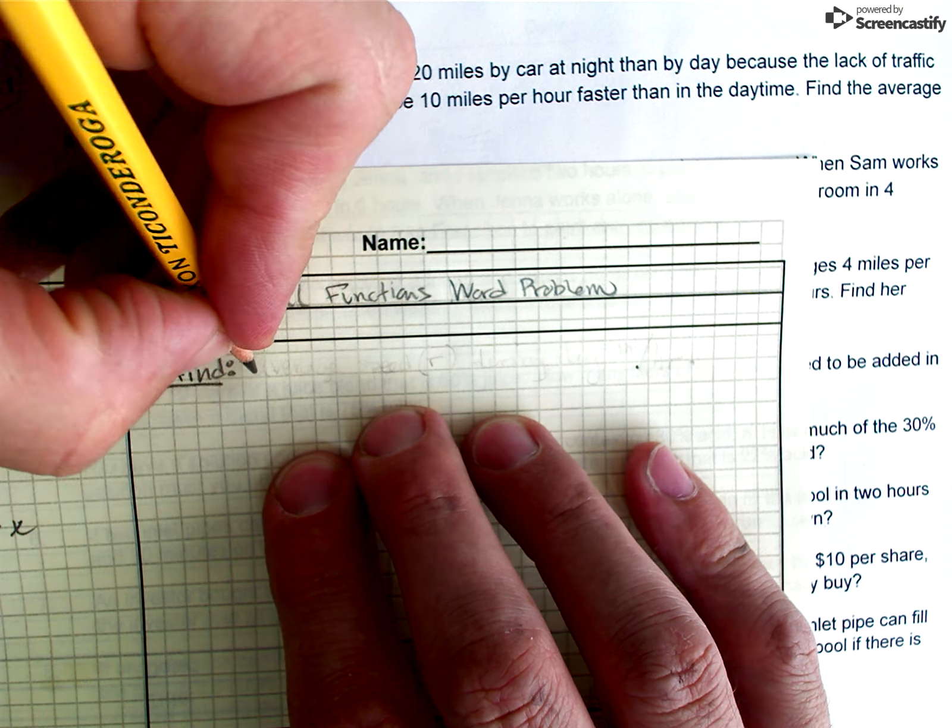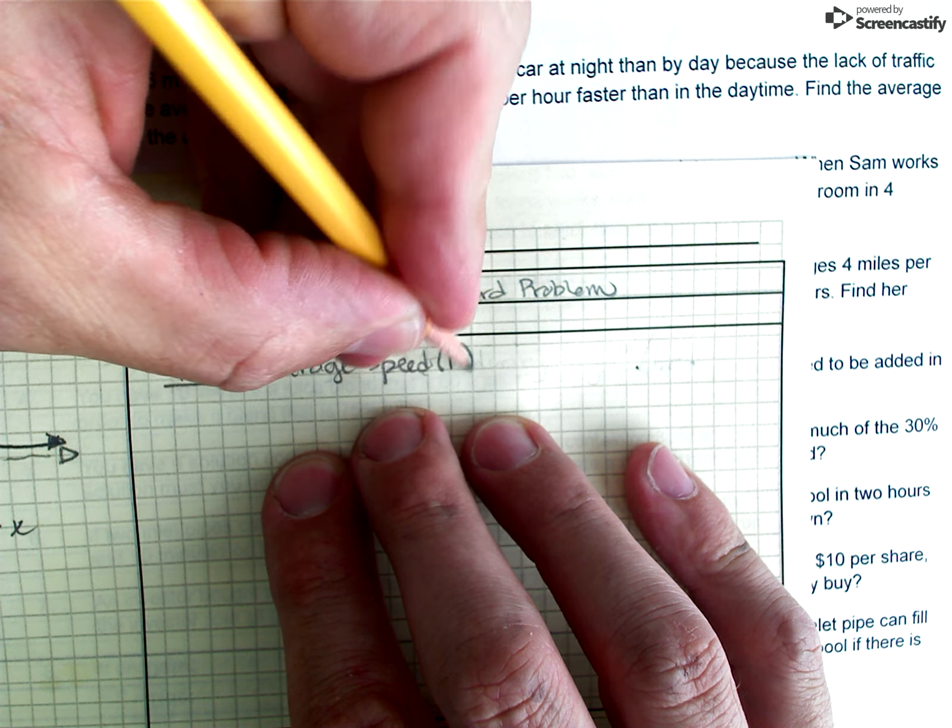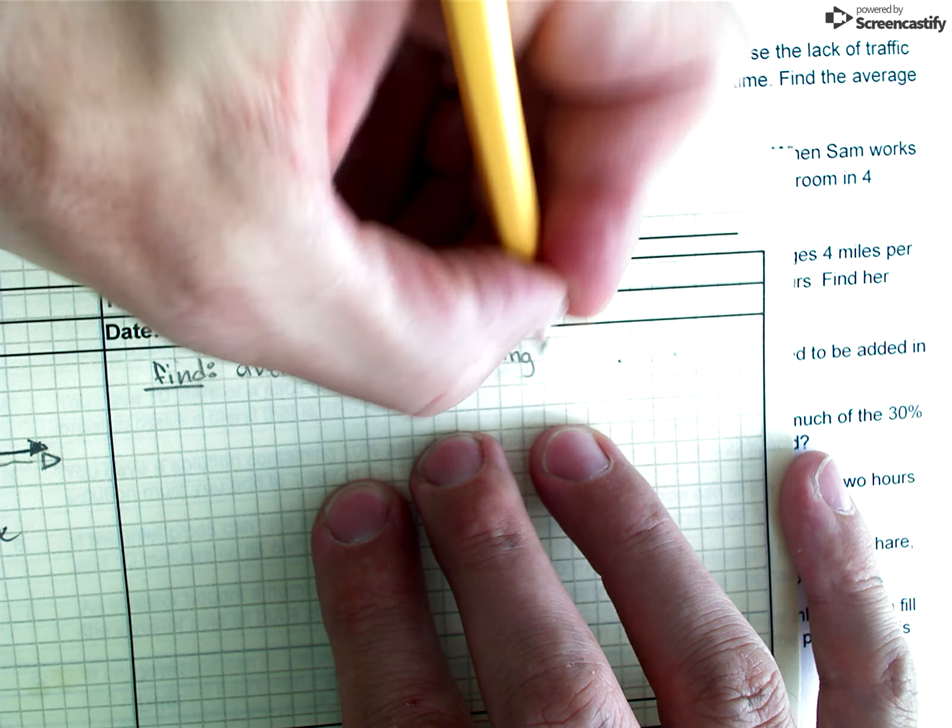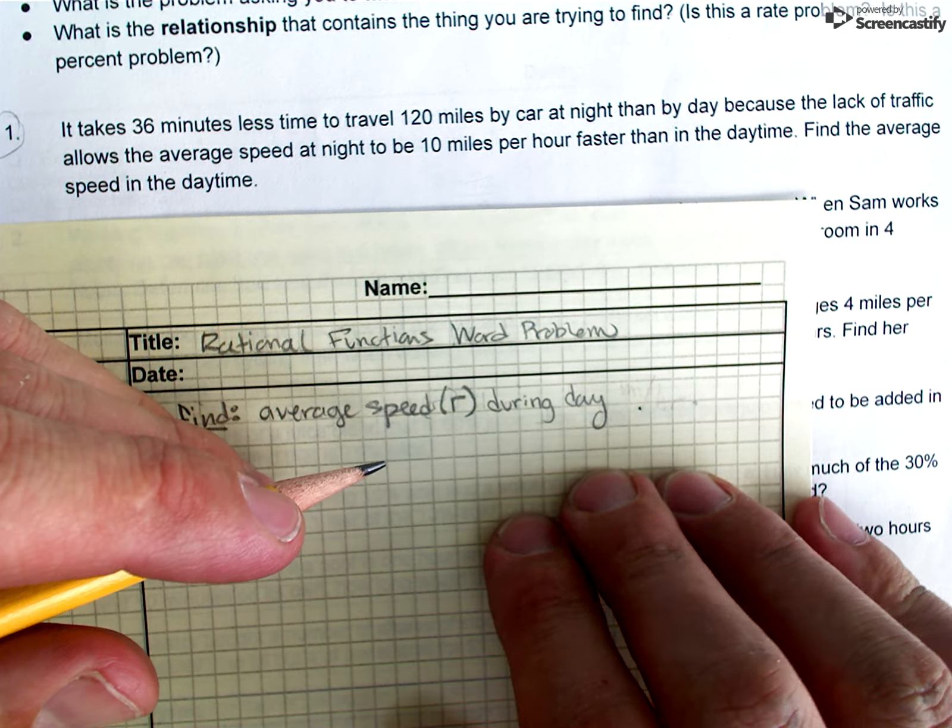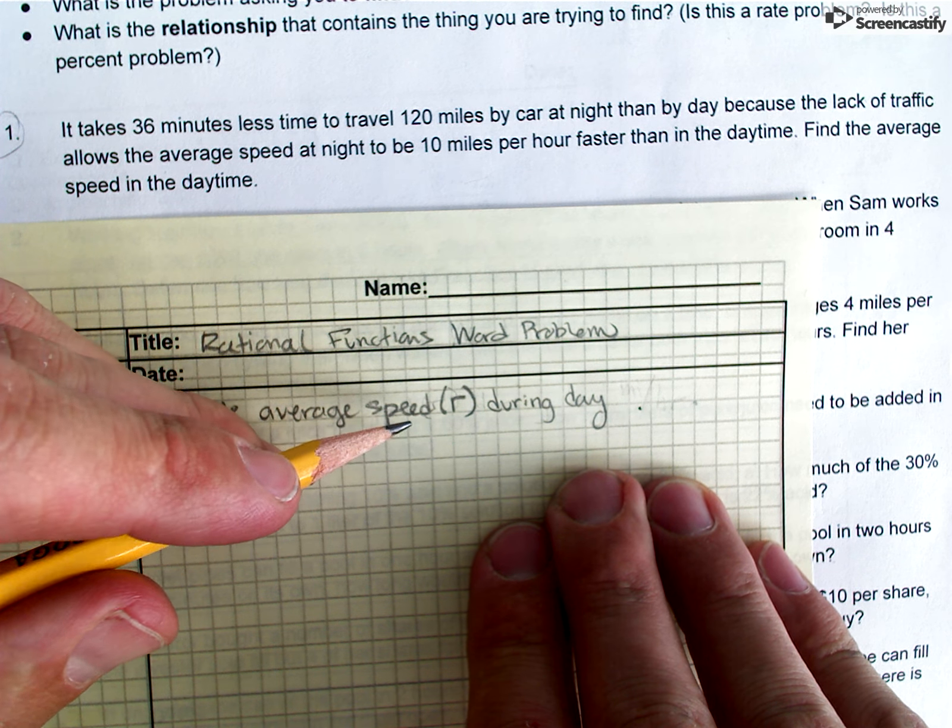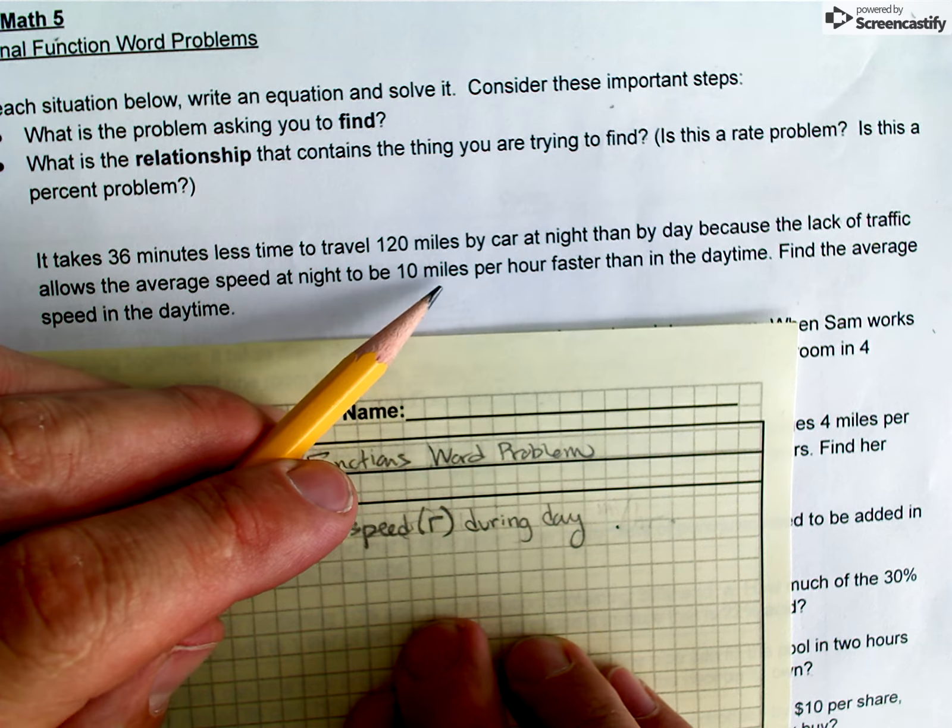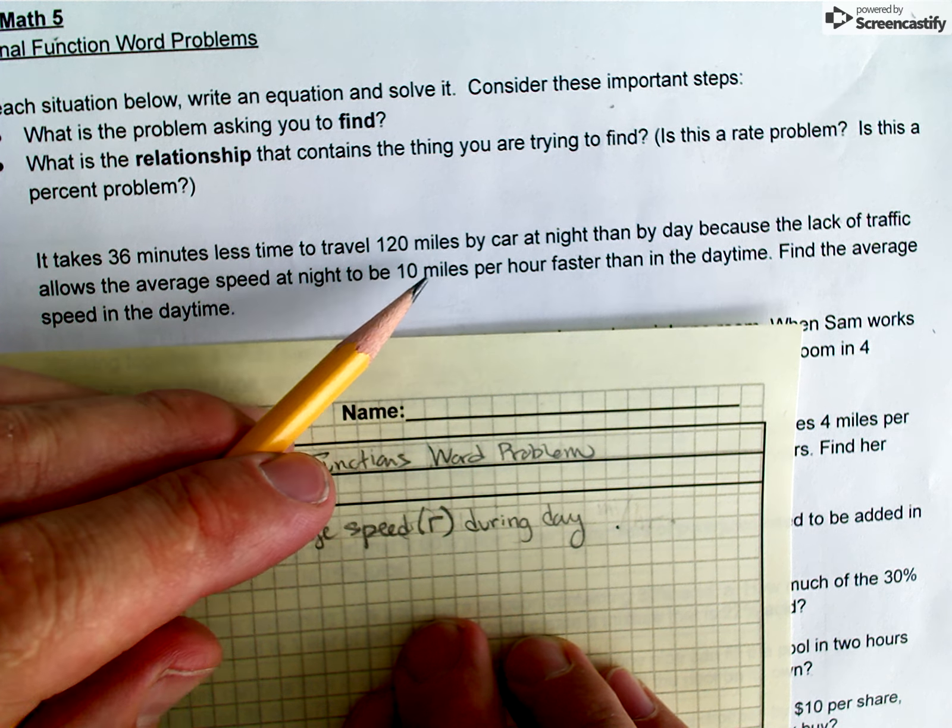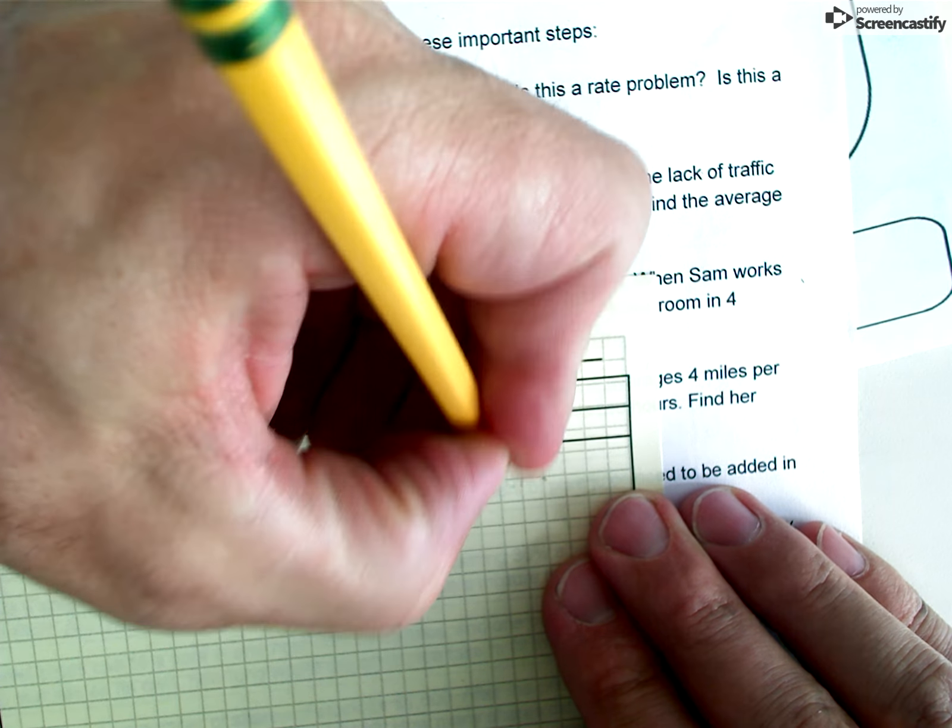And in this problem, I'm trying to find the average speed. I'm going to call that R for rate, and that's the average speed during the day. The other thing I need to think about before I move on is what are the units of my answer going to be. Typically we report speed in miles per hour for cars. And that unit is here in our problem because we see that it's going 10 miles per hour faster during the nighttime compared to the day. So I'm just going to choose miles per hour as my unit.